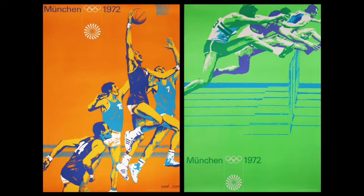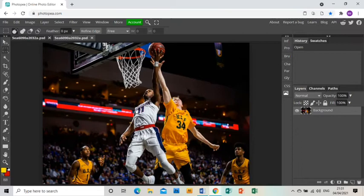Welcome to this tutorial showing you how to create a piece of artwork in response to the artist Ottil Eike. In Photopia I've already opened up this photograph of basketball players that I found on Google. Please be mindful of copyright issues when using images from the internet.